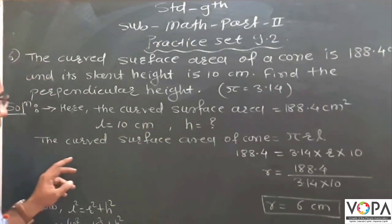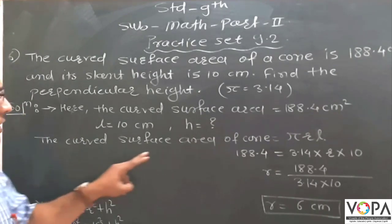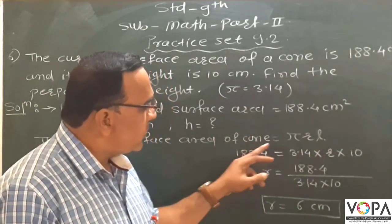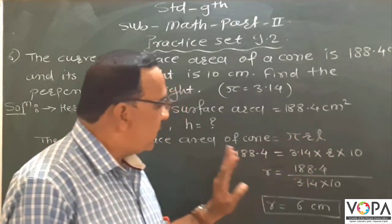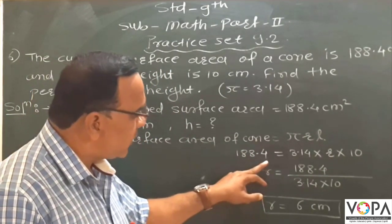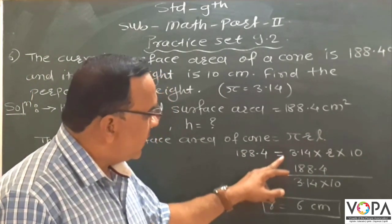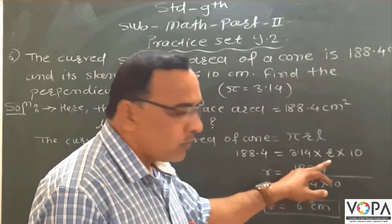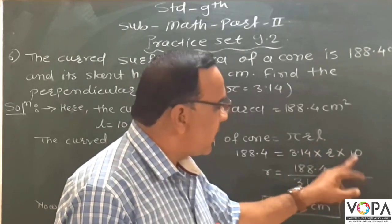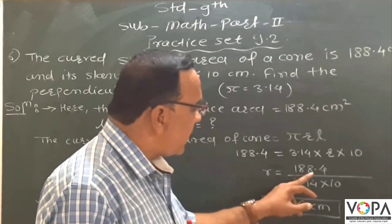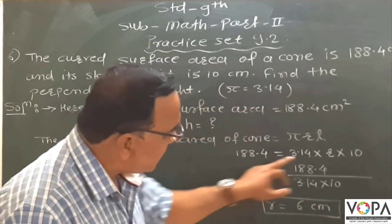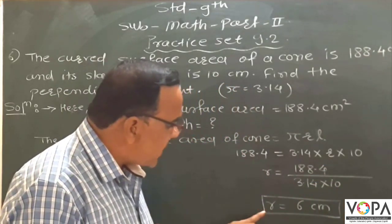First to solve, the curved surface area of cone is equal to pi r l. Now the curved surface area is 188.4 cm² equals pi value 3.14, r value not given, then find r. Now l is 10. Now r is equal to 188.4 divided by 3.14 multiplied by 10. By solving this, we get r is equal to 6 cm.